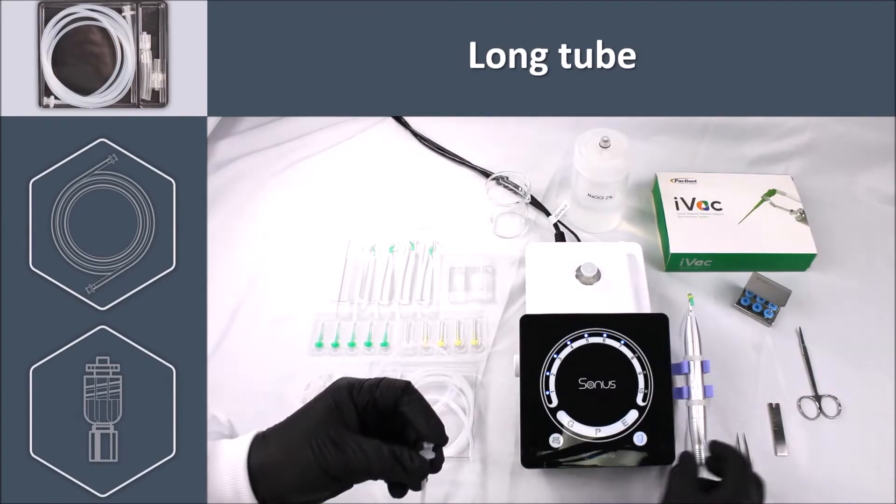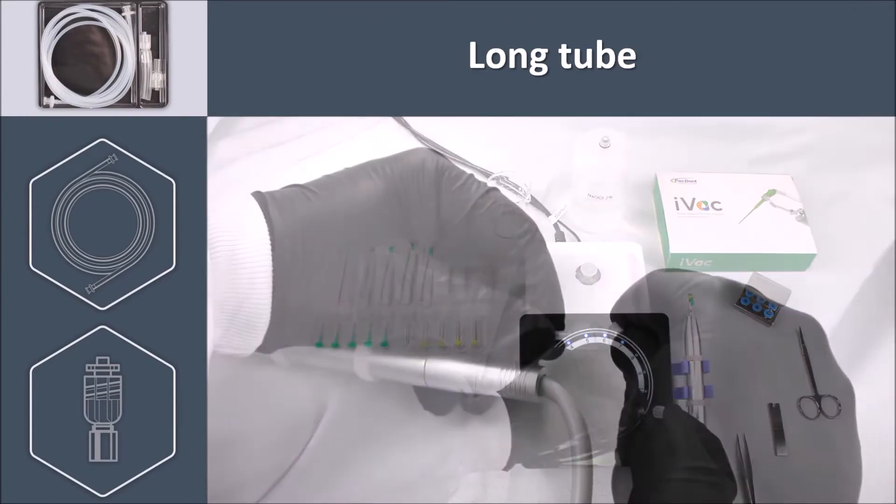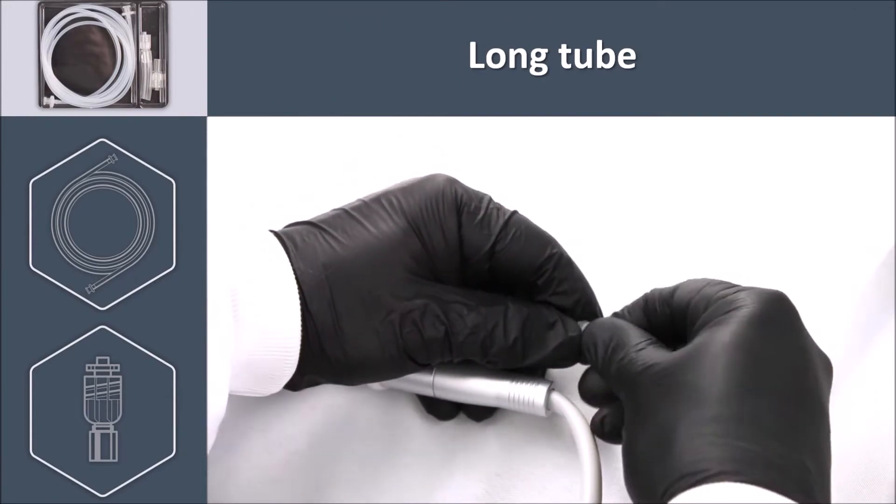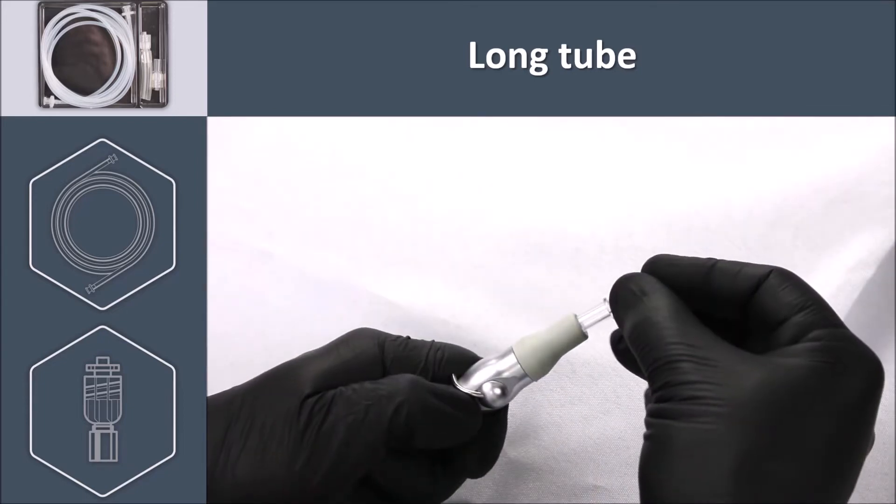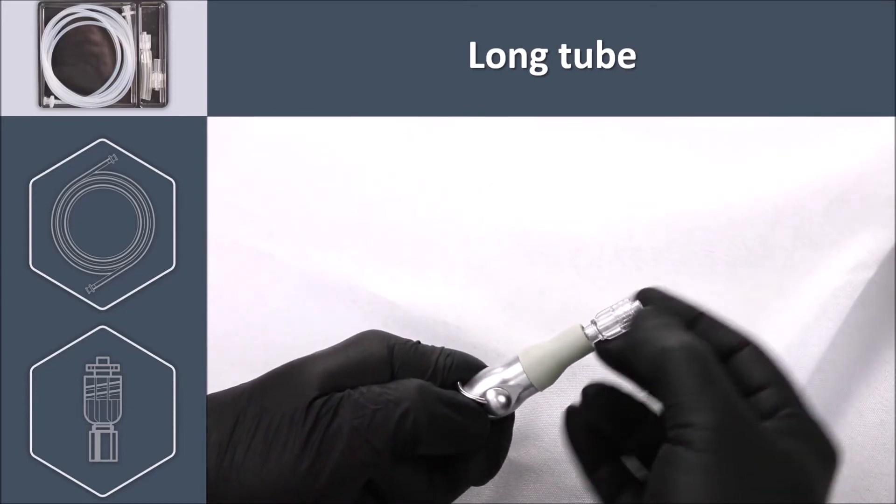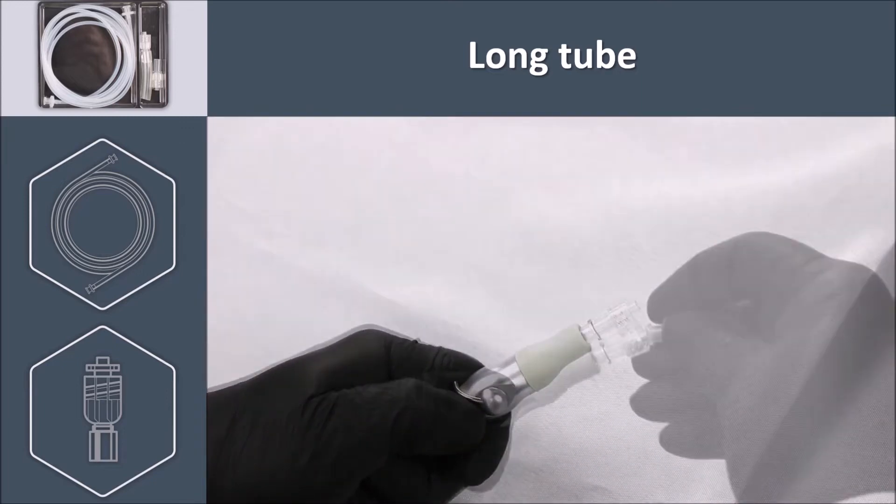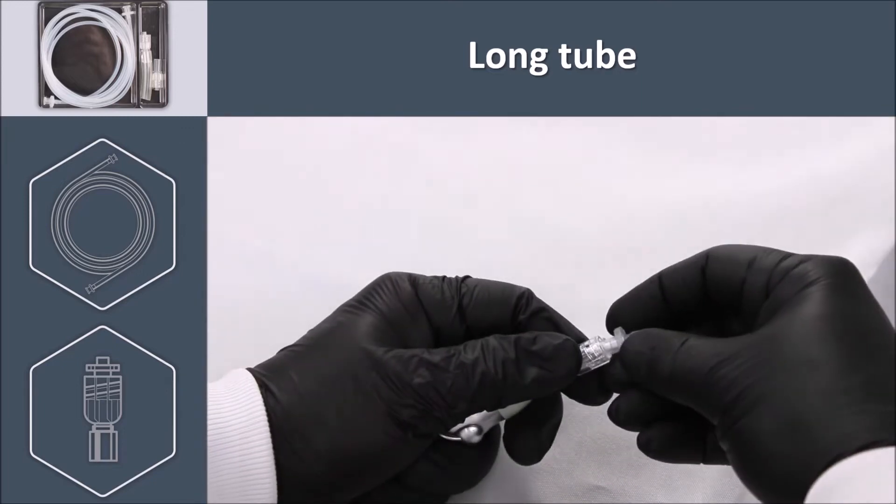Take the long tube and connect one of the female connectors to the short tube male connector. Install the low-vac adapter on the low vacuum terminal outlet. Connect the other end of the long tube to the adapter.